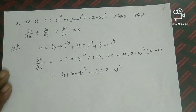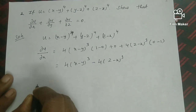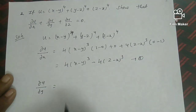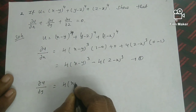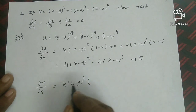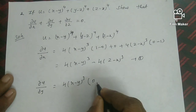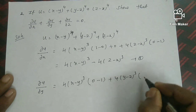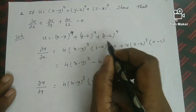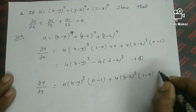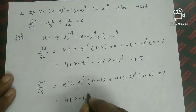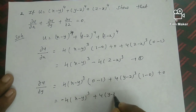Computing ∂u/∂y with x and z treated as constant: differentiating (x-y)⁴ gives 4(x-y)³ × (-1) = -4(x-y)³. Differentiating (y-z)⁴ gives 4(y-z)³ × 1 = 4(y-z)³. Differentiating (z-x)⁴ gives 0. So ∂u/∂y = -4(x-y)³ + 4(y-z)³. This is equation 2.